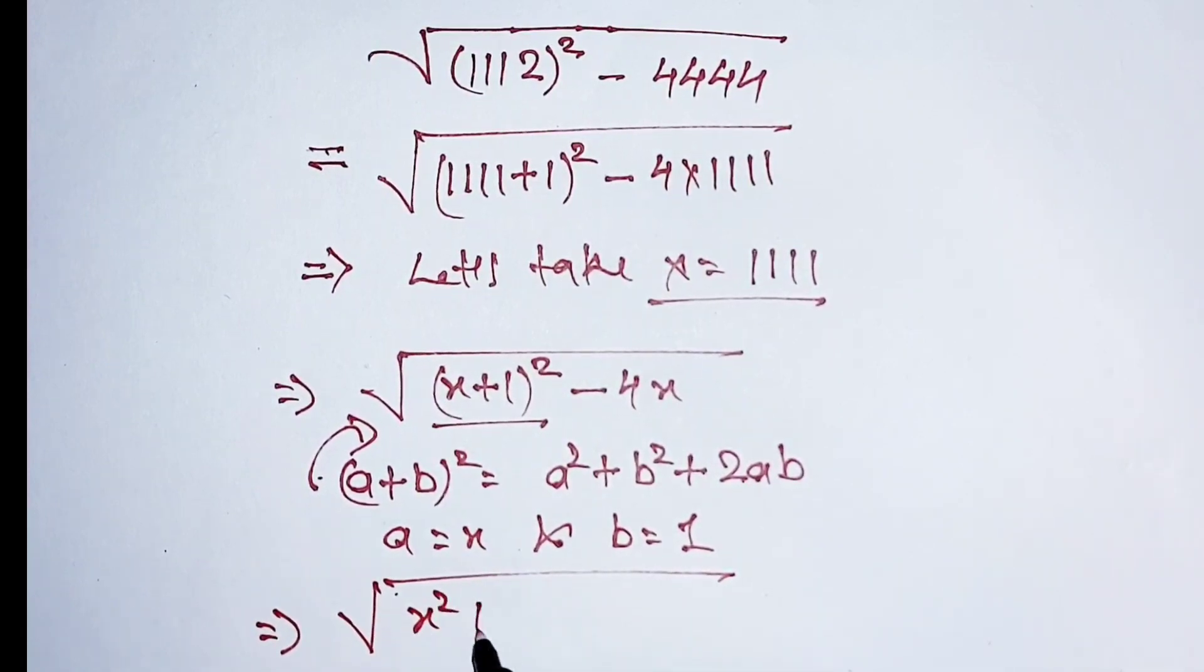Applying this formula here, we get the square root of x squared plus 1 squared plus 2x minus 4x.